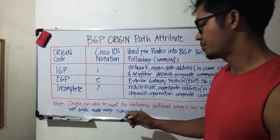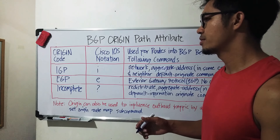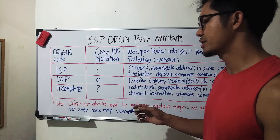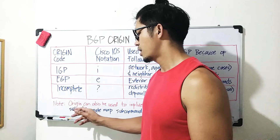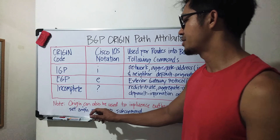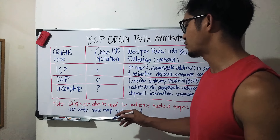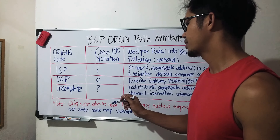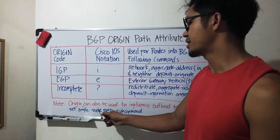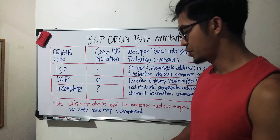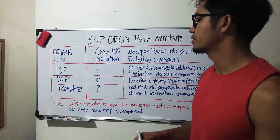I haven't seen any videos or read from a book using this command, so I'm not very familiar with what value you can set here. But from the book I'm reading, you can actually use it to influence inbound traffic by setting it under the route map you created. You can always verify this on a router using the question mark.